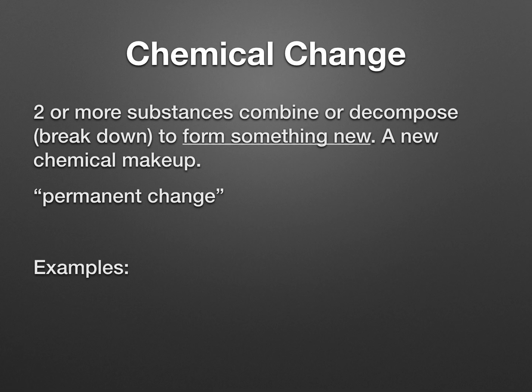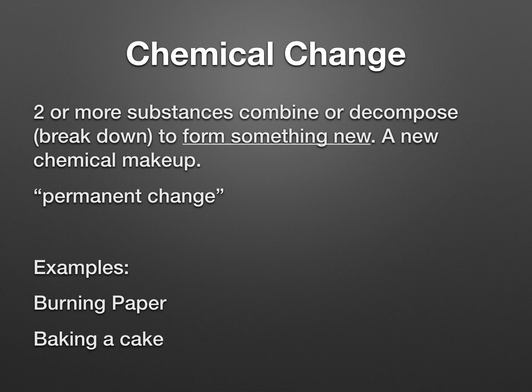Examples of chemical change would be burning paper. Unlike cutting paper, which is still paper, when you burn paper you're taking paper and making it carbon. That would be a chemical change. And when you bake a cake, you take all of these ingredients and put them in. When they come out, they are not just flour and sugar anymore — they have changed their molecular structure to make that delicious cake you're about to eat.